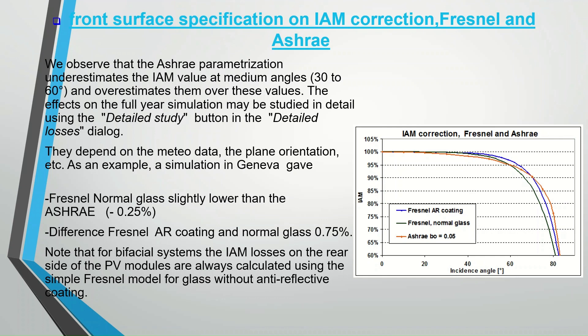We observe that the ASHRAE parameterization underestimates the IAM value at medium angles 30 to 60 degrees, and overestimates them over these values. The effects on the full year simulation may be studied in detail using the detailed study button in the detailed losses dialogue; they depend on the meteorological data, the plane orientation, etc. As an example, a simulation in Geneva gave Fresnel normal glass slightly lower than ASHRAE by 0.25%. The difference for Fresnel AR coating versus normal glass is 0.75%. Note that for bifacial systems, the IAM losses on the rear side of the PV modules are always calculated using the simple Fresnel model for glass without anti-reflective coating.